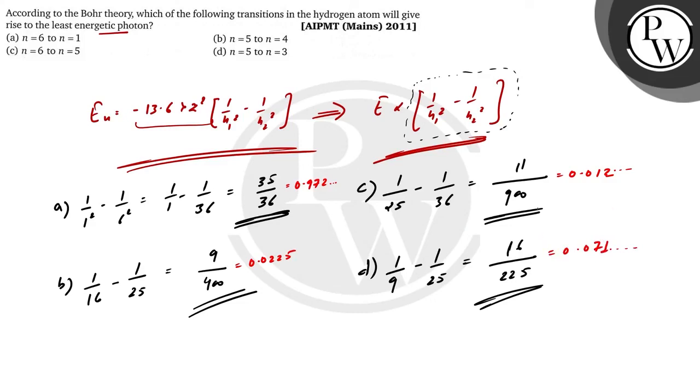If you see all the values, the smallest value is 0.01. So option C is the right answer. I hope this answered your question. Thank you and all the very best.